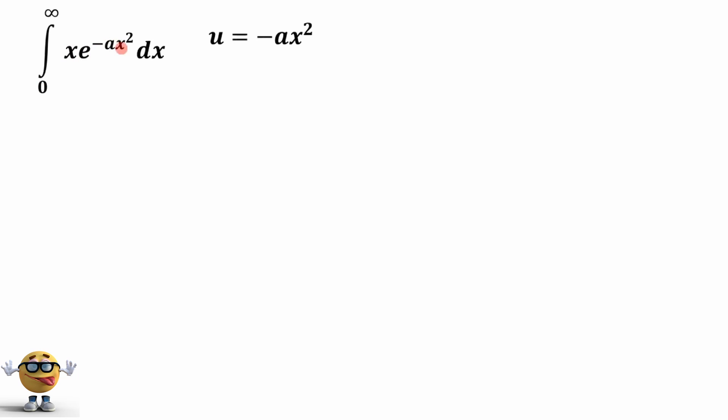Okay, the first thing we're going to do is set up a u substitution. We're going to set u equal to the exponent negative ax squared, because we can work with the derivative. It's kind of here. I'll show you how that works.